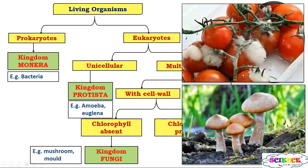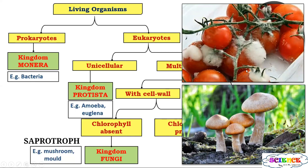If we talk about the mode of nutrition, fungi are saprotrophic — that is, they obtain nutrients from dead and decaying organic matter. All the nutrients are absorbed. For example, when tomatoes or any fruit or vegetable decays or goes bad, we see fungus growing on it. Fungus absorbs nutrients from the decaying organic matter. So we call them saprotrophs.